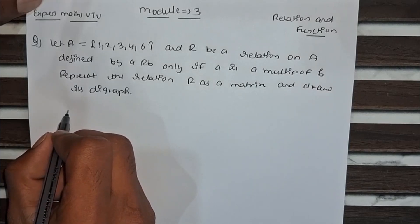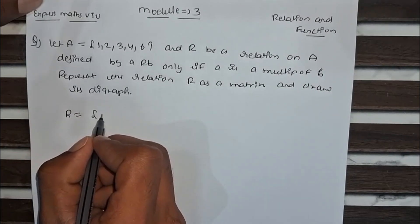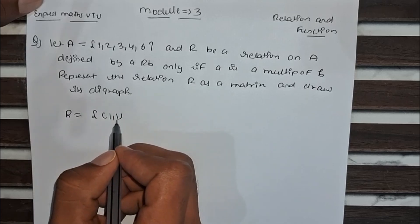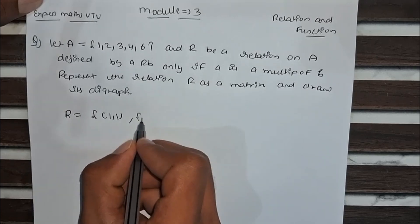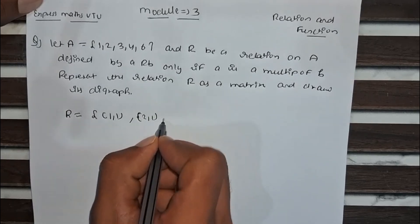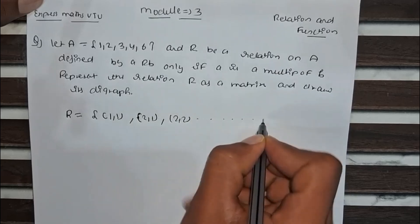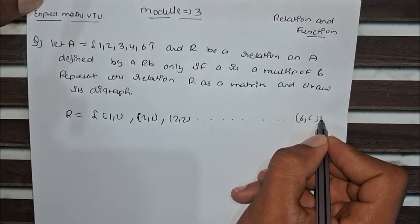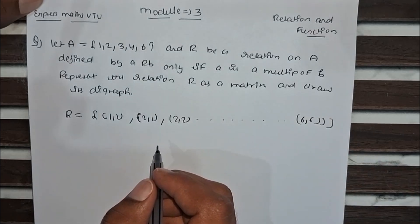Now let's find all the relation pairs. R equals: (1,1) because a is a multiple of b — same element. Then (2,1), (2,2), and continuing like that up to (6,6). These are all the pairs.